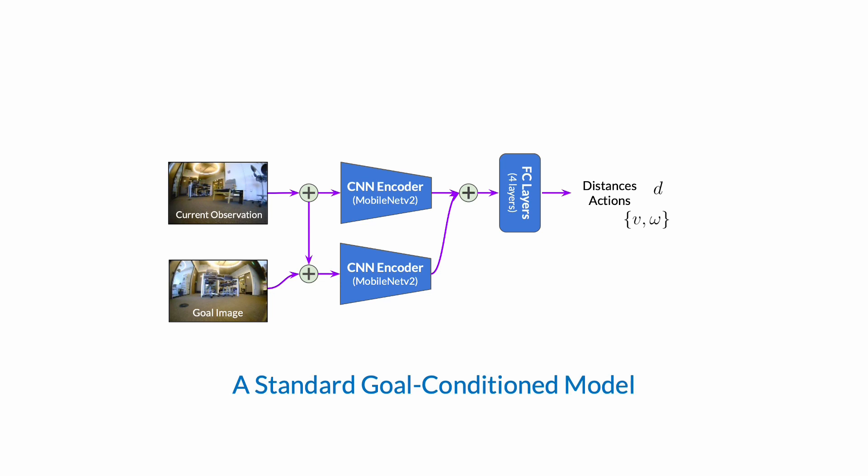We make two simple changes to adapt such models so they may be trained using heterogeneous datasets with a large variance in size, speed, and other parameters.